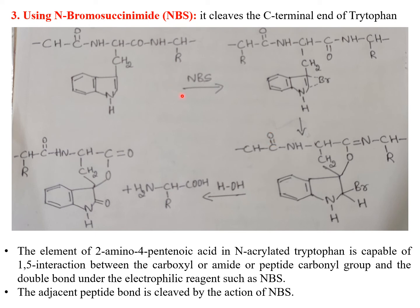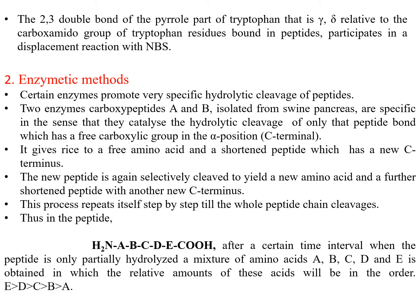N-bromosuccinimide (NBS) clips the C-terminal end of tyrosine and tryptophan residues. The element of 2-amino-4-pentenoic acid in an N-acylated tryptophan is capable of a 1,5-interaction between the carboxyl or amide peptide carbonyl group and the double bond. Under the electrophilic reagent NBS, the adjacent peptide bond is cleaved. The 2,3-double bond of the pyrrole part of tryptophan, gamma-delta relative to the carboxyl group of tryptophan residues bound in peptides, participates in a displacement reaction with NBS.